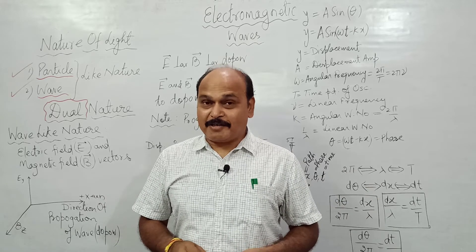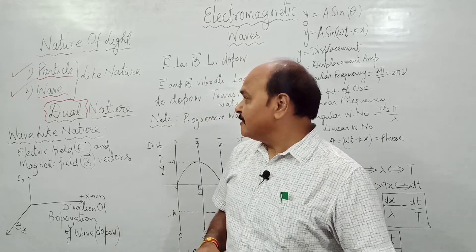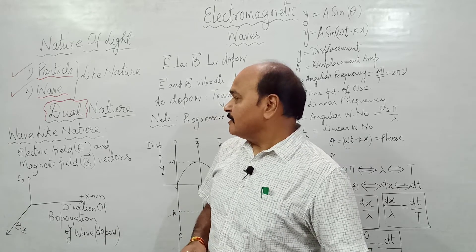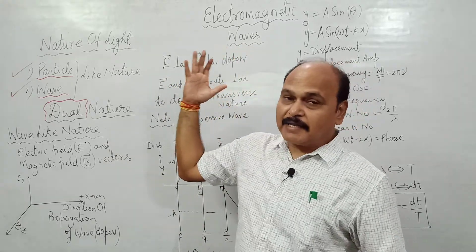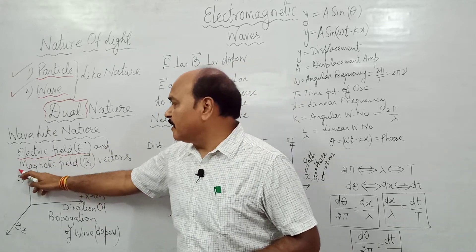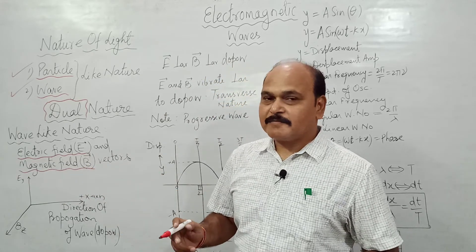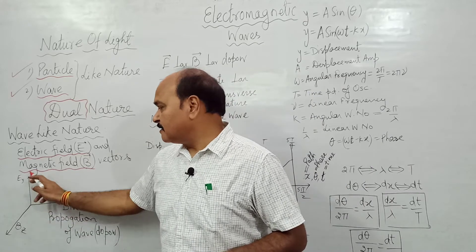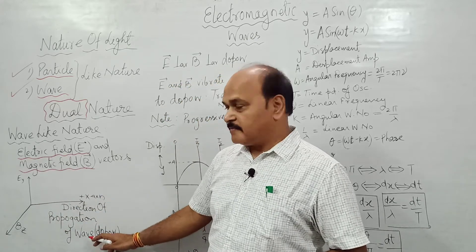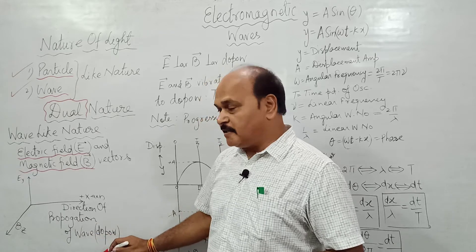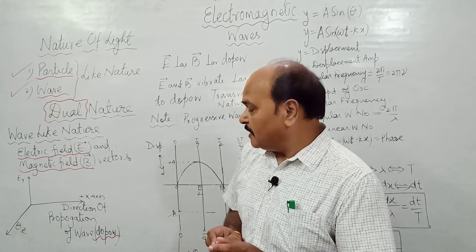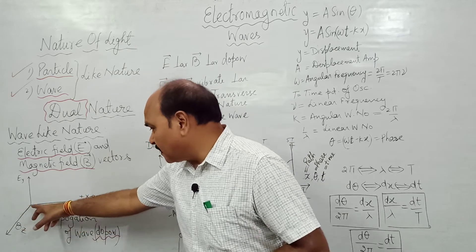When we say light is wave-like, we call it an electromagnetic wave. In an electromagnetic wave, the electric field vector as well as the magnetic field vector are perpendicular to each other, and at the same time they are perpendicular to the direction of propagation of the wave — written in short form as DOPO.